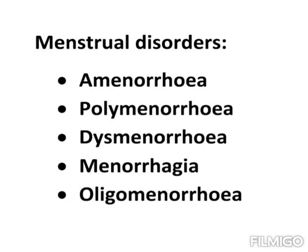So what is primary amenorrhea? If a person does not attain sexual maturity or puberty till the age of 18, it is called primary amenorrhea. Then absence of menstruation for over 3 consecutive months is called secondary amenorrhea.